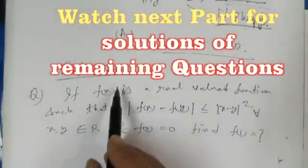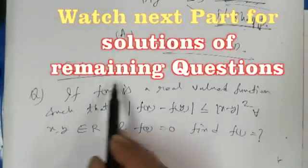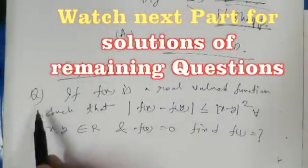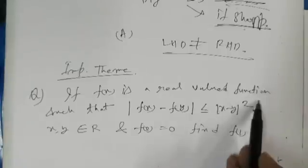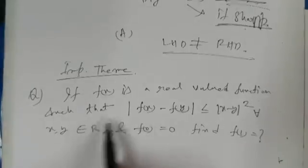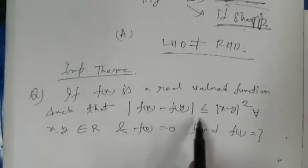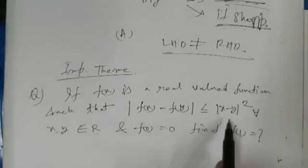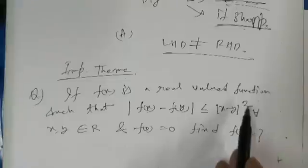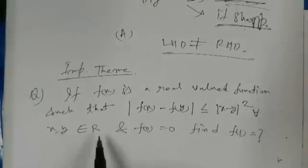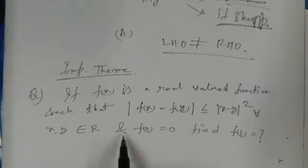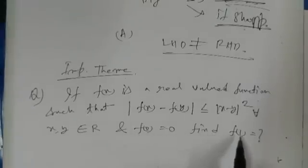Let's discuss an important question. The question is: if f(x) is a real-valued function such that |f(x) - f(y)| ≤ |x - y|² for all values of x, y belonging to ℝ, real numbers, and f(0) = 0, then what is the value of f(1)?